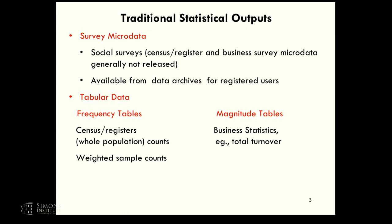Traditionally in the 90s and 2000s, statistical agencies release survey microdata placed in archives for registered users to access—typically social survey data, not business data. Agencies also release tabular data: frequency tables from whole population counts from censuses, weighted sample counts, and magnitude tables for business statistics.